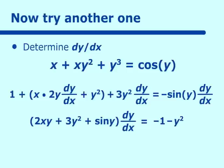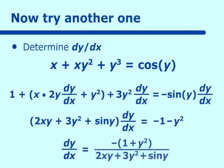Now we can solve for dy/dx. We factor out dy/dx from the left side, giving negative 1 plus y squared on the right, all over 2xy plus 3y squared plus sine y. This was not that difficult as long as we remember to use the product rule on xy squared.